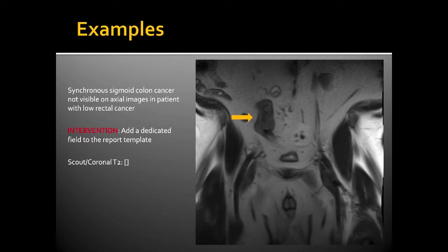Here's a case of a synchronous sigmoid colon cancer that was not visible on the axial images in a patient with low rectal cancer undergoing MRI for staging. The intervention is to add a dedicated field to the report template that says 'SCOUT/coronal T2' with a blank. The concept is very similar to the CT SCOUT view.